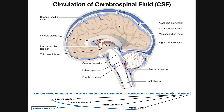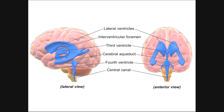CSF also allows the removal of wastes back into the venous blood — we'll discuss that more in the next video covering the dural venous sinuses. Here, we're going to focus on how cerebrospinal fluid is made and the course it takes throughout the CNS. There are four brain ventricles: the two lateral ventricles (left and right, also called ventricles one and two), plus a third ventricle and a fourth ventricle.